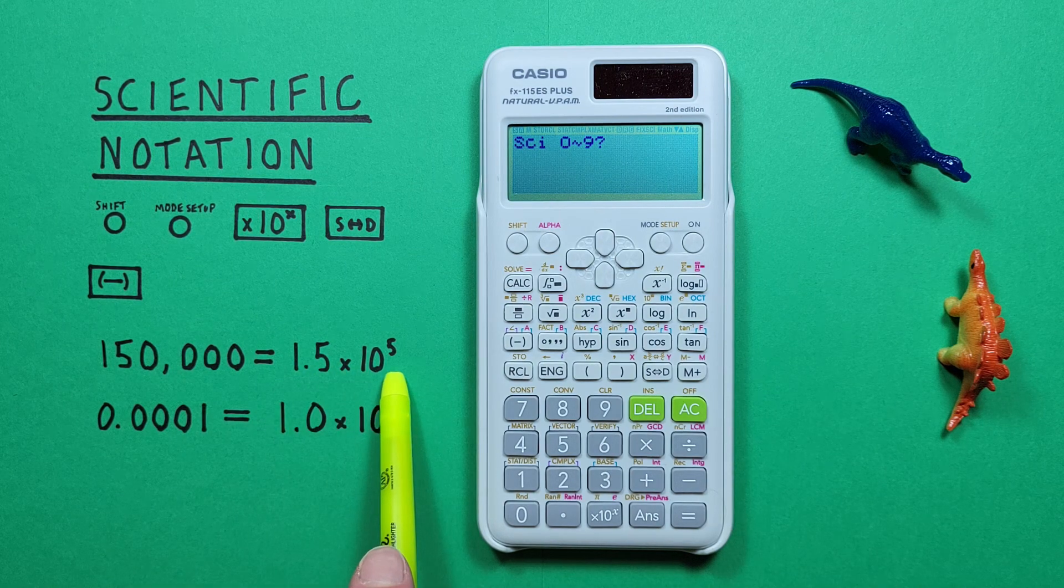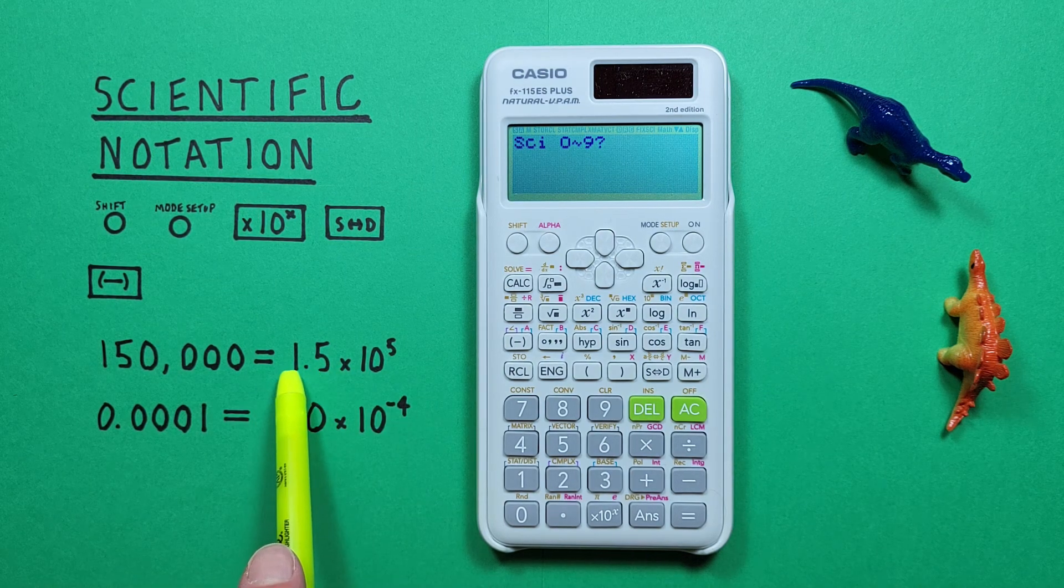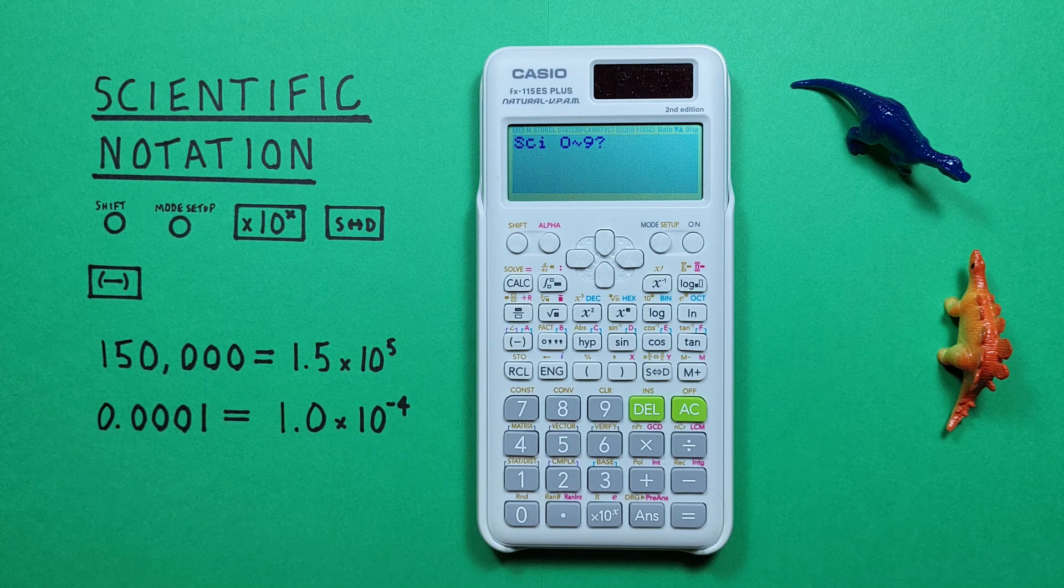If we want to display our number like this, we have 2 digits, so 1.5. So we'll choose 2.